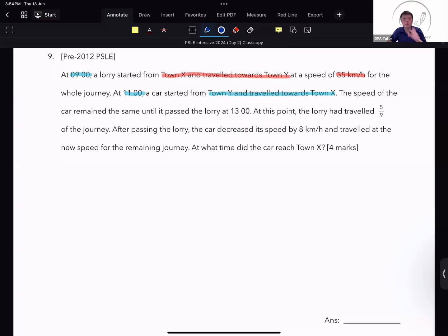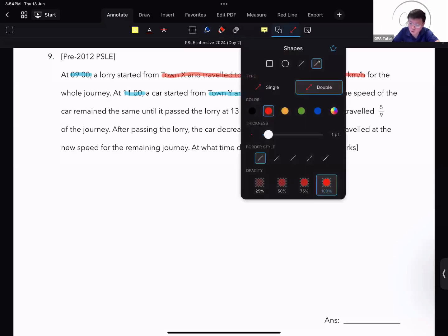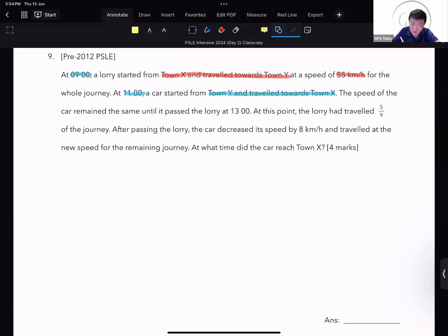Not only opposite direction, but the lorry has a head start. The speed of the car remained the same until it passed the lorry at 1300 hours. So the two of them meet at 1300. I'm going to draw out the distance diagram to represent that piece of information.